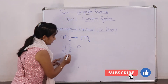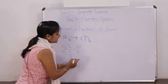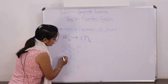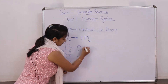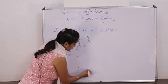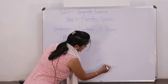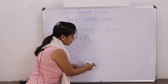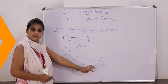Divide 6 by 2: 2 threes are 6, remainder 0. Divide 3 by 2: remainder 1 — put 1. Divide 1 by 2: 2 ones are 2, remainder 1 — put 1. Now from bottom to top we read the remainders. So the binary result is 1100 base 2. The decimal number 12 is represented as 1100 in the binary number system.